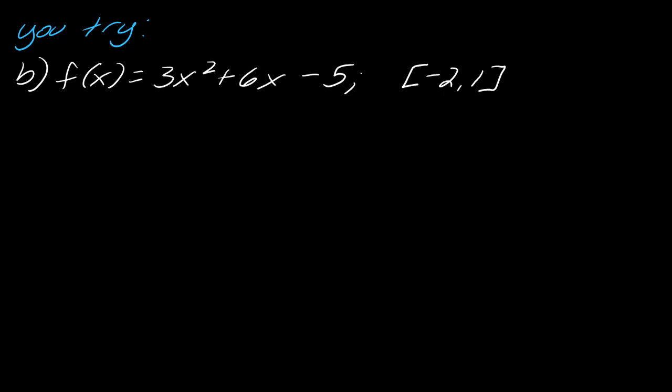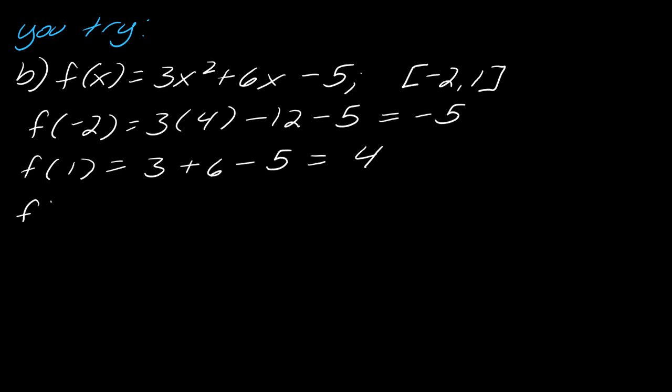So once again, I've got to figure out what is f(-2). So that's going to be 3 times 4 minus 12 minus 5. So this will just equal -5. And then f(1). So we just plug that in. And so I've got -5 and 4. So I'll need that information shortly. And then I also need to know what f'(x) is. So this is just 6x + 6. So now I can start plugging everything in.